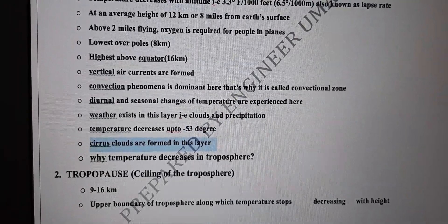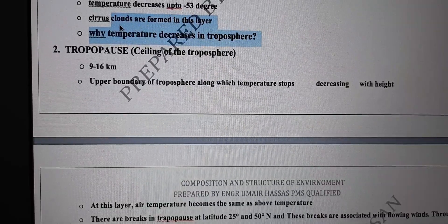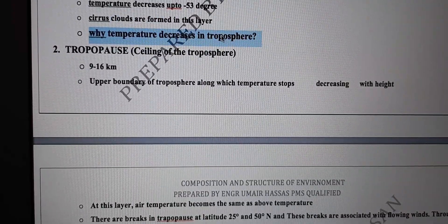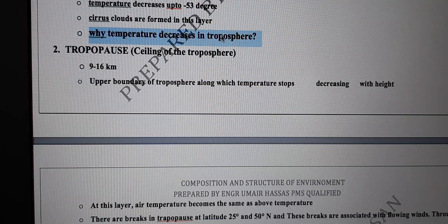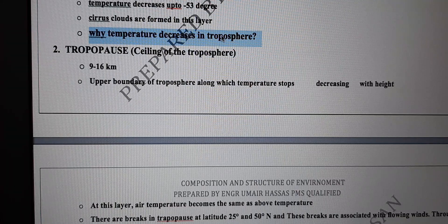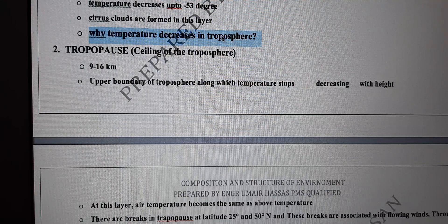Cirrus clouds are formed in this layer. As for why temperature decreases in troposphere — the incoming radiation is absorbed by the earth's surface, which heats up. The layers immediately above the surface get heated more compared to upper layers. Also, as air rises it becomes cooler — this cooling phenomenon is also called condensation. So as you move upward, temperature normally decreases.